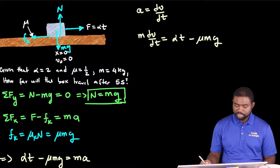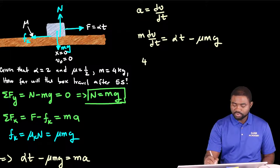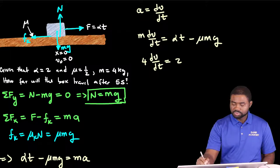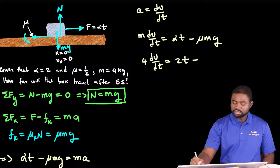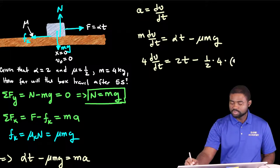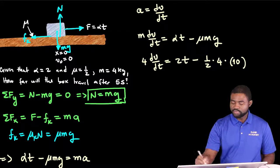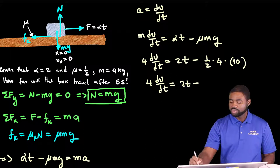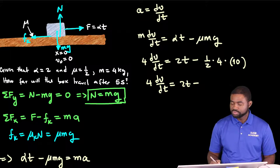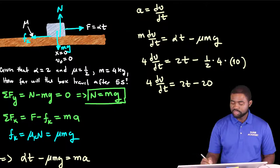We can choose at this particular moment to put in the values. M is equal to 4. So, this is 4 Dv over Dt equal to 2, because alpha is a constant 2. This is minus 1 half multiplied by 4 multiplied by G, which is 10. So, we will have 4 Dv over Dt equal to 2T minus 20.